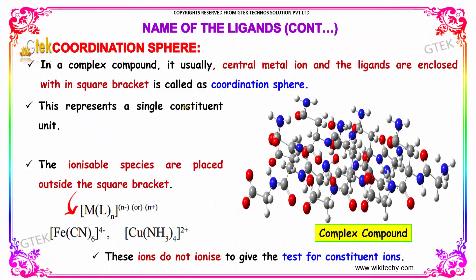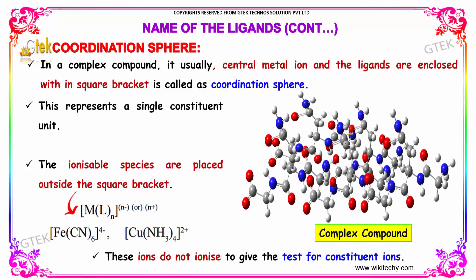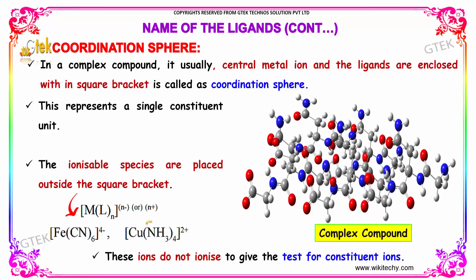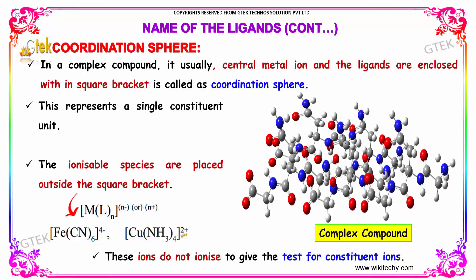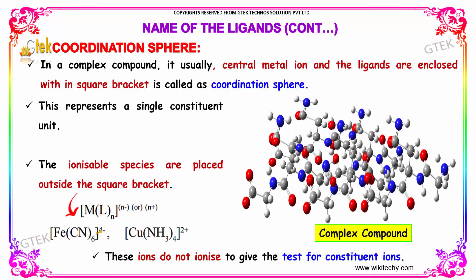The coordination sphere: in a complex compound, the central metal ion and the ligands are enclosed within a square bracket, and that is called the coordination sphere. It represents a single constituent unit. The ionizable species are placed outside the square bracket, and these ions do not ionize to give the test for constituent ions. You can see the metal, the ligands, and the ion enclosed in the coordination sphere — the square bracket.